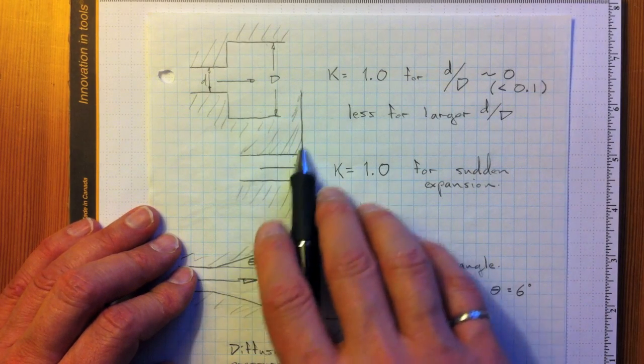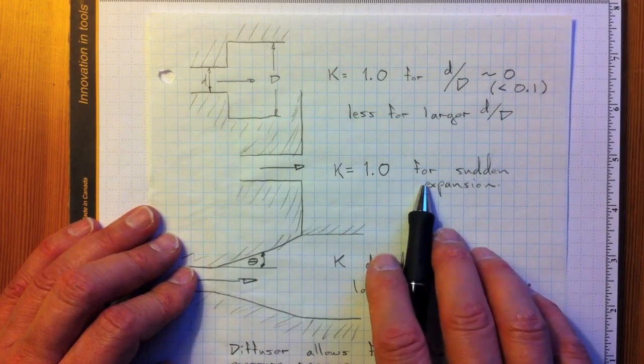So unlike the entrance, we can't fix anything by rounding this off. The jet still behaves the same way.